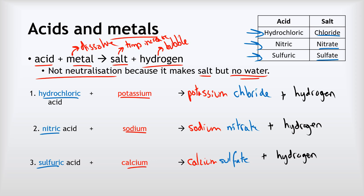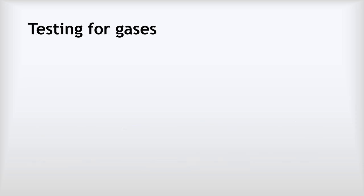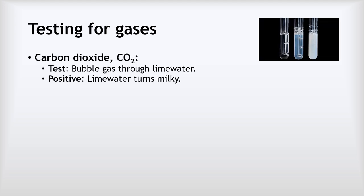That's the reaction of acids with metals. The last thing to look at is how we test for different gases. You've seen that some reactions make carbon dioxide and some make hydrogen — we also need to test for oxygen. The test for carbon dioxide: bubble the gas through limewater. If carbon dioxide is present, the limewater will gradually turn milky or cloudy. That's a positive test for carbon dioxide.